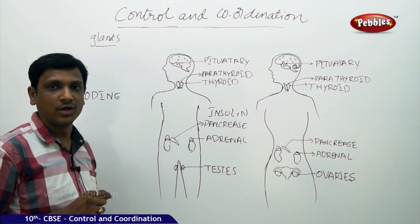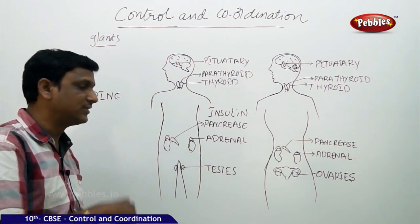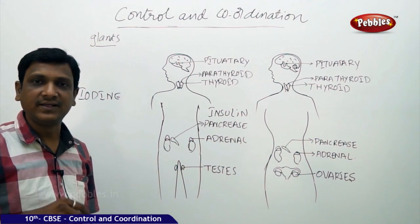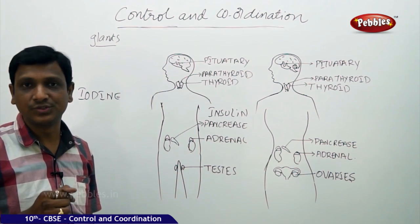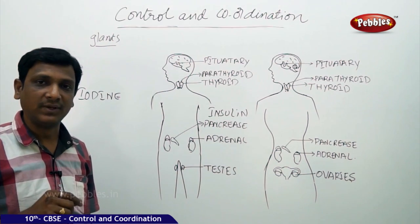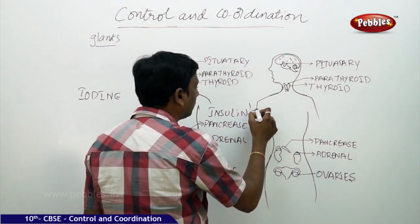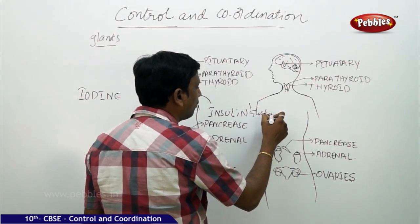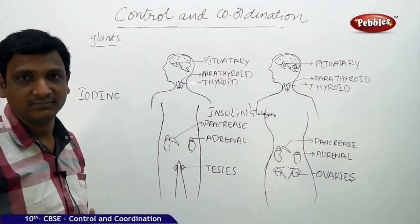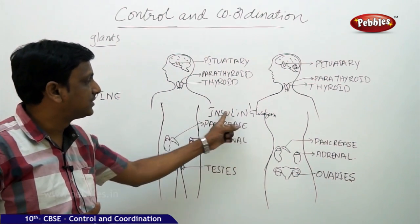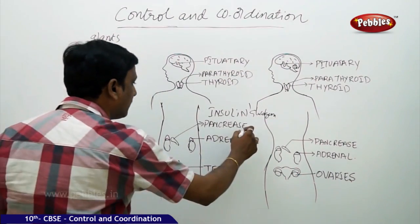The pancreas also secretes another hormone called glucagon. Glucagon acts in the opposite way to insulin. When you are fasting and have not eaten anything, your body still needs glucose. Glucagon converts the stored glycogen in the liver back to glucose and puts it into the blood. So insulin and glucagon work in opposite, antagonistic ways. These two hormones are both secreted by the pancreas.